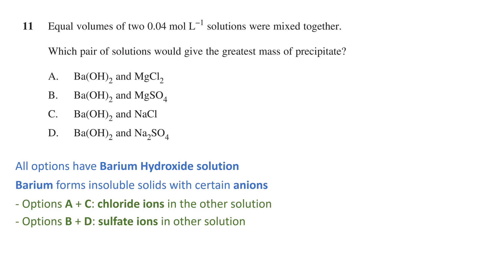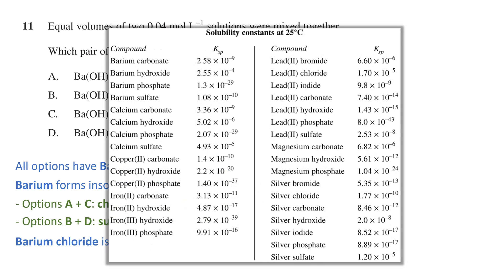Considering the combinations barium ions would make with these anions, we know that barium chloride is soluble while barium sulfate is not. We can look at the table of solubility constants found at the back of the exam. This provides a list of salts ranging from slightly insoluble to very insoluble based on their Ksp or solubility product values. Barium sulfate has a very low Ksp value and therefore forms a precipitate, while barium chloride is not found on this list and can be considered soluble.